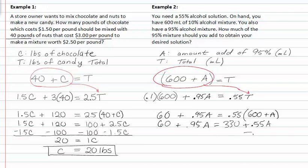From here we can subtract .55A from both sides and we can also subtract 60 from both sides. This will give us .4A equals 270.